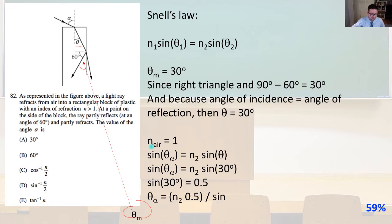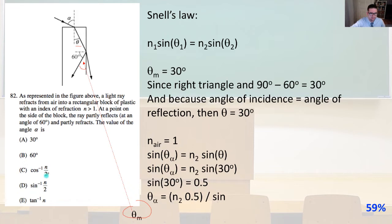The index of refraction of air equals 1, so sine of alpha equals N2 times sine theta. Sine of alpha equals N2 times sine of 30 degrees, so sine of alpha equals 0.5 N2. Therefore theta alpha equals the inverse sine of the quantity N2 times one half. That is answer D.